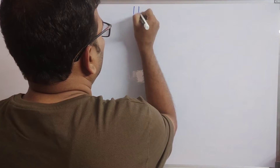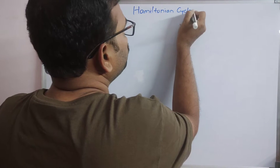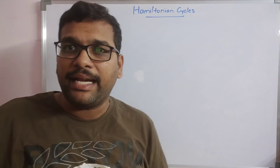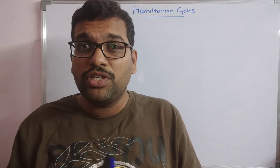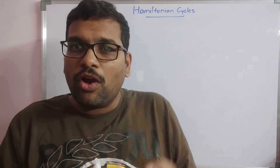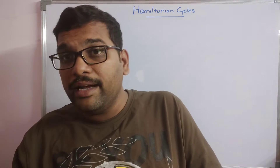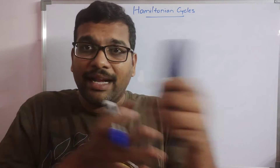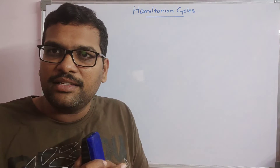Hello friends, welcome back to our channel. Today we will see one more application in backtracking: finding Hamiltonian cycles in a graph. Hamiltonian cycles is one of the applications of backtracking. Backtracking's main goal is to find all the feasible solutions, not the best solution. We check all the possibilities, and if one possibility doesn't lead to a feasible solution, we backtrack and start with an alternate solution.